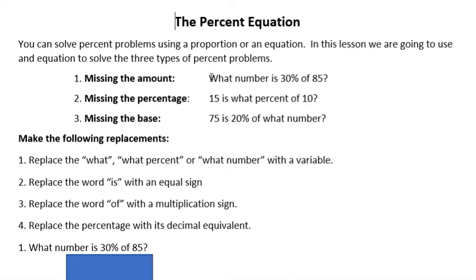When it's stated this way, what number is 30% of 85, we are missing the amount. If it's stated as 15 is what percent of 10, we're missing the percentage in that problem. And if it's stated as 75 is 20% of what number, then we're missing the base. So those are the three different types.